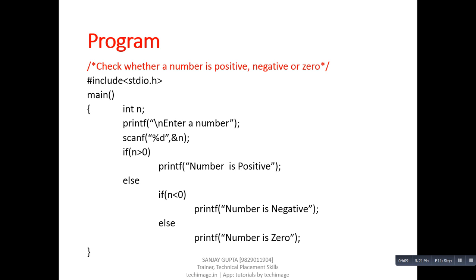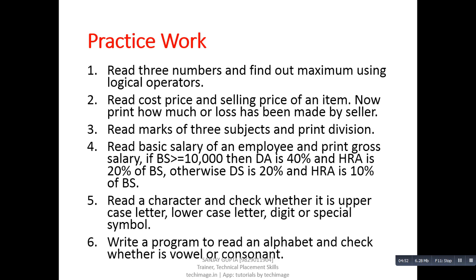Now we can relate the else-if ladder with this program. The program checks whether a number is positive, negative, or zero. First we check the if condition: n greater than zero. If this condition is true, the compiler prints 'number is positive'. If this condition is false, control transfers to the else part, where there is another if checking n is less than zero. If true, the output will be 'number is negative'; otherwise, the output will be 'number is zero'.